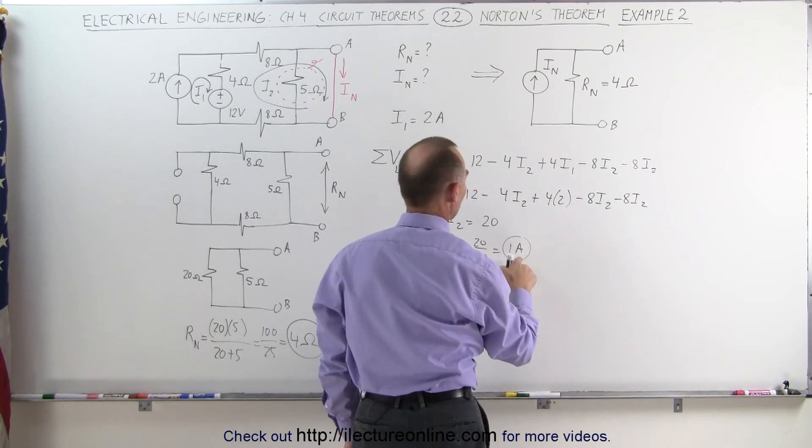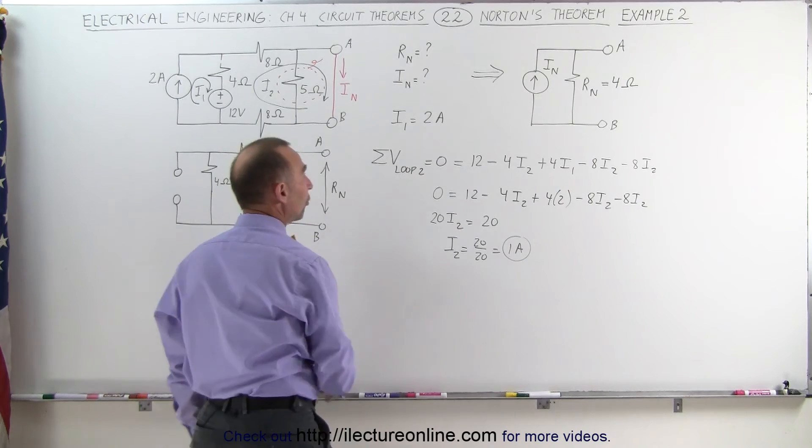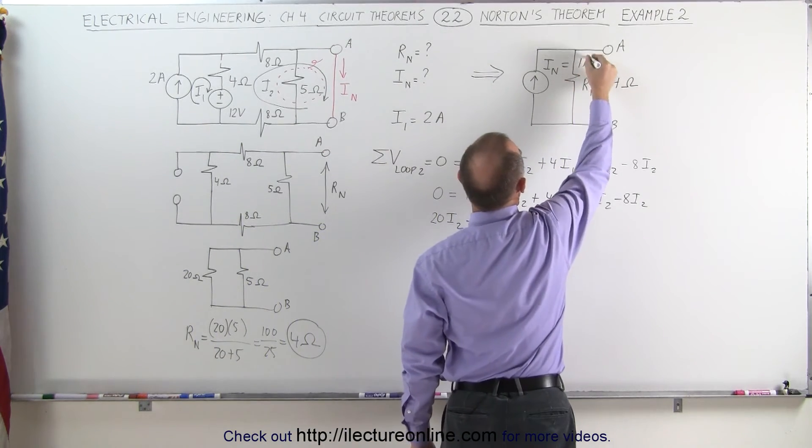The equivalent Norton current is 1 amp. The Norton resistance is 4 ohms. This becomes equal to 1 amp.